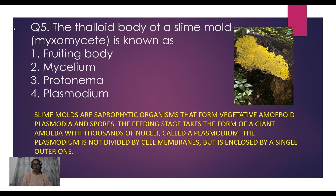The fifth question asks: the thaloid body of a slime mold is known as — fruiting body, mycelium, protonema, or plasmodium? The correct answer is plasmodium. Don't confuse this with the malarial parasite — the thaloid body of slime mold is also called plasmodium. Slime molds are saprophytic organisms; the feeding stage takes the form of a giant amoeba with thousands of nuclei called the plasmodium, which is not divided by cell membranes but enclosed in a single outer membrane.